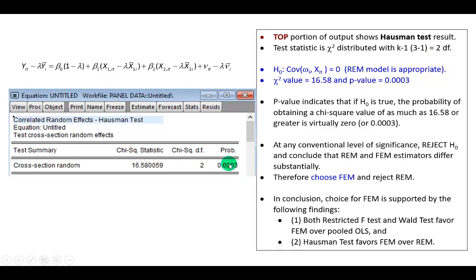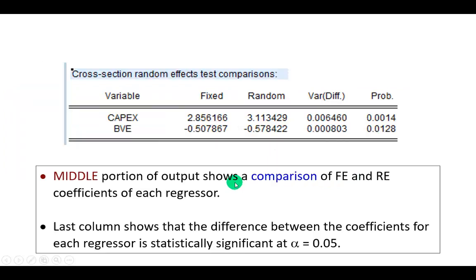This is the p-value, which at any conventional level of significance you'd have to reject the null hypothesis in favor of the alternative, which says go with fixed effects. The middle portion shows a comparison of fixed effects and random effects coefficients of each of the regressors.